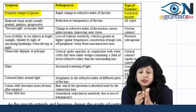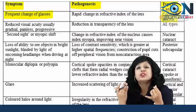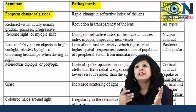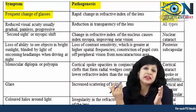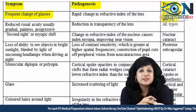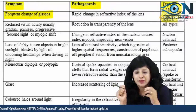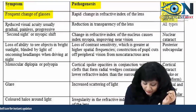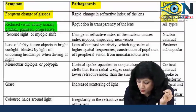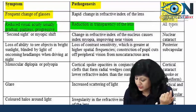In nuclear cataract, there is an increase in refractive index, which is related to the development of progressive index myopia, while it is vice versa with cortical cataract. So frequent change of glasses is due to the rapid shift of refractive index. The second symptom is reduced visual acuity — gradual, painless, and progressive — because of reduction in transparency and opacification, occurring in all types of cataract.